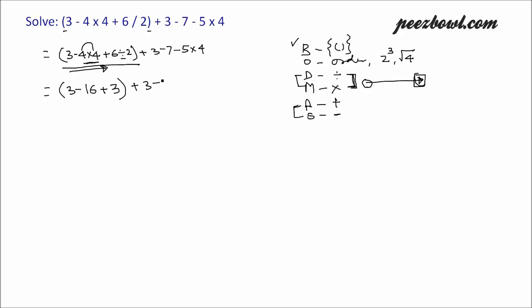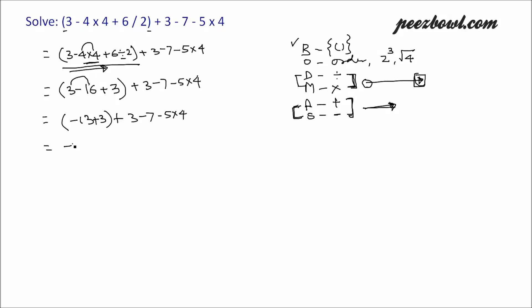Then for the rest of the expression, 3 minus 7 minus 5 multiplied by 4. Within the parenthesis we have minus and plus — addition and subtraction — which have equal priority in BODMAS, so we perform from left to right. So 3 minus 16 is minus 13, plus 3 gives minus 10. So minus 10, plus 3 minus 7 minus 5 multiplied by 4. We are done with our parenthesis operation.